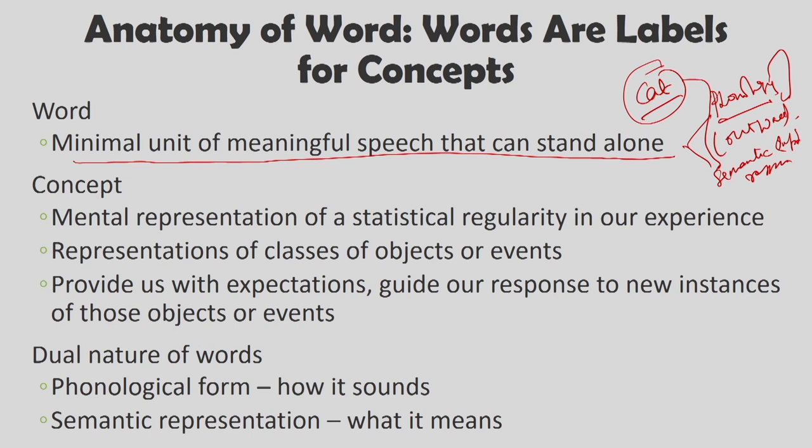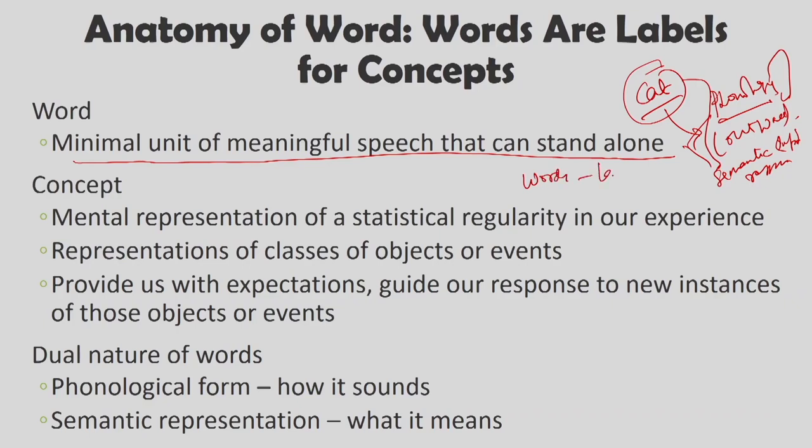Words are basically labels for concepts. The word 'cat' here is a label for a concept, and the concept is a feline animal. Within the concept of 'cat' you can have several other kinds of cats — a calico cat or other forms — and 'feline animal' is a higher-level concept. Words are then generally labels for concepts. Once we say words are labels for concepts, let us try to understand what concepts are. Concepts are mental representations of statistical regularity in our experience.